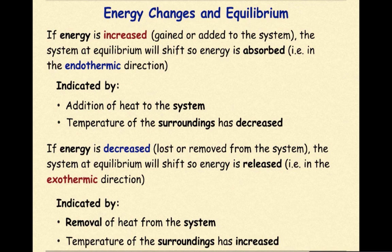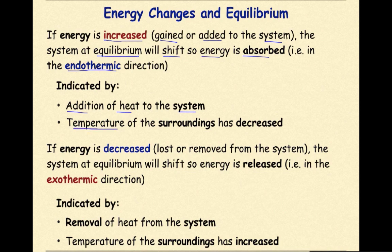Energy changes in equilibrium. If energy is increased — in other words gained or added to the system — the system at equilibrium will shift so energy is absorbed, in other words in the endothermic direction. This is indicated by the addition of heat to the system and more noticeably a temperature of the surroundings has decreased. That's really important to notice because when we talk about temperature changes in terms of equilibrium and we're adding heat, we can't measure the system but we can measure the surroundings. So if we notice that the temperature is decreasing in the surroundings, that means the system has absorbed it.